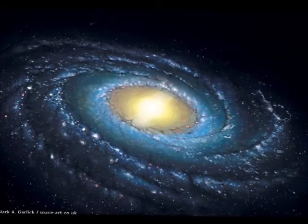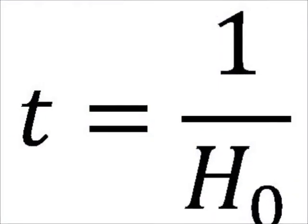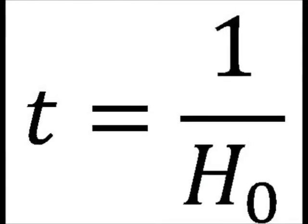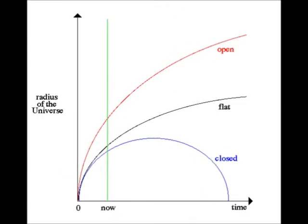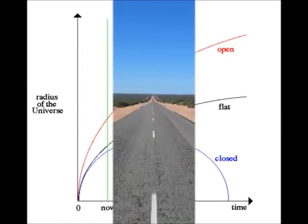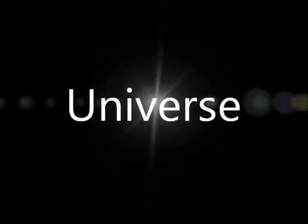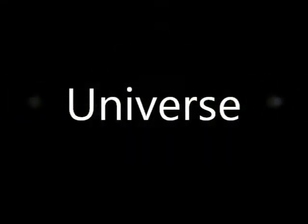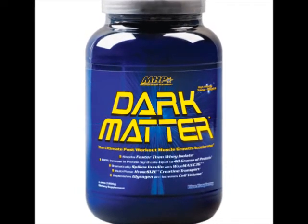We can't calculate the age of the universe until we know its density. A reasonable estimate for the age of the universe is found from t equals 1 over Hubble's constant, but this formula assumes that the universe has been expanding at the same rate for its whole lifetime. In fact, the expansion rate of the universe is slowing down, even for the open universe — so in the past, the universe was expanding faster than it is now. That means we've overestimated the time it's taken for the universe to reach its current size. The more dense the universe is, the younger it must be. If you include all the dark matter and dark energy detected indirectly, current estimates of the actual density of the universe aren't very far off the critical density.